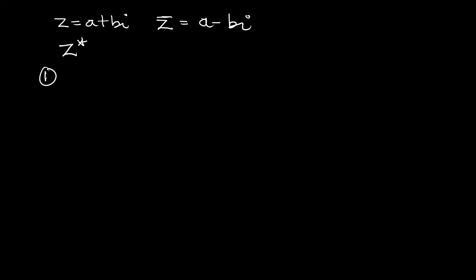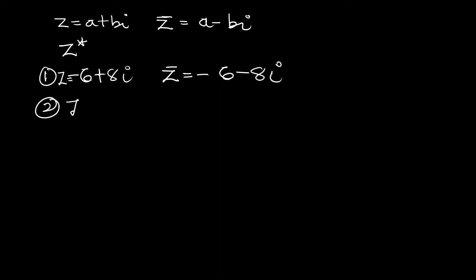Let's find the conjugate of the following complex numbers. First, z equals negative six plus eight i. What would z-bar be? All you have to do is negate the imaginary part, and you are going to get negative six minus eight i. Let's try another one: z equals one minus i. Z-bar will be equal to one plus i, because we negate the imaginary part, so negative negative gives us positive i.